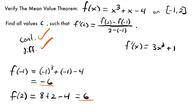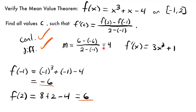The slope calculation: m = [f(2) − f(−1)] / [2 − (−1)] = [6 − (−6)] / [2 − (−1)] = 12 / 3 = 4. So the slope between our endpoints is 4. Since we've confirmed continuity and differentiability on the interval, we can set our derivative equal to this slope and solve for values of c. We set 4 = 3c² + 1.